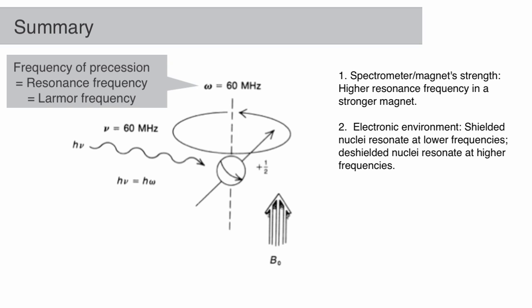Second, the electronic environment. Shielded protons have a lower resonance frequency. De-shielded protons have a higher resonance frequency.